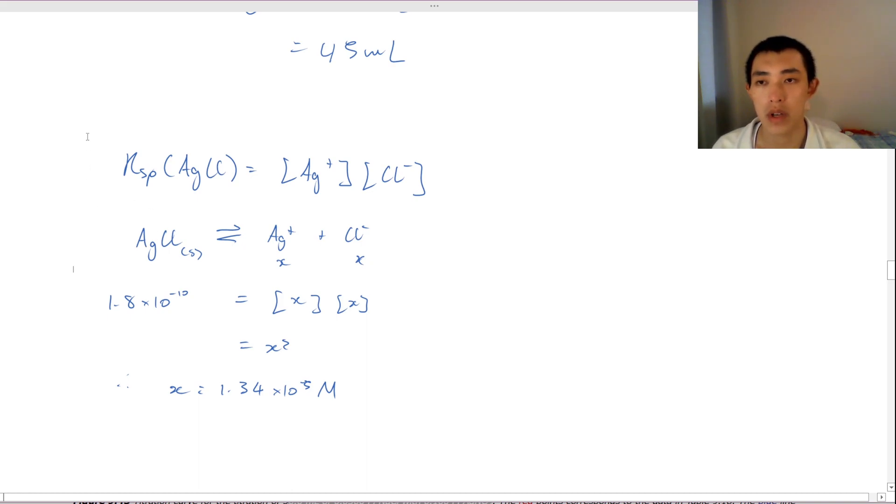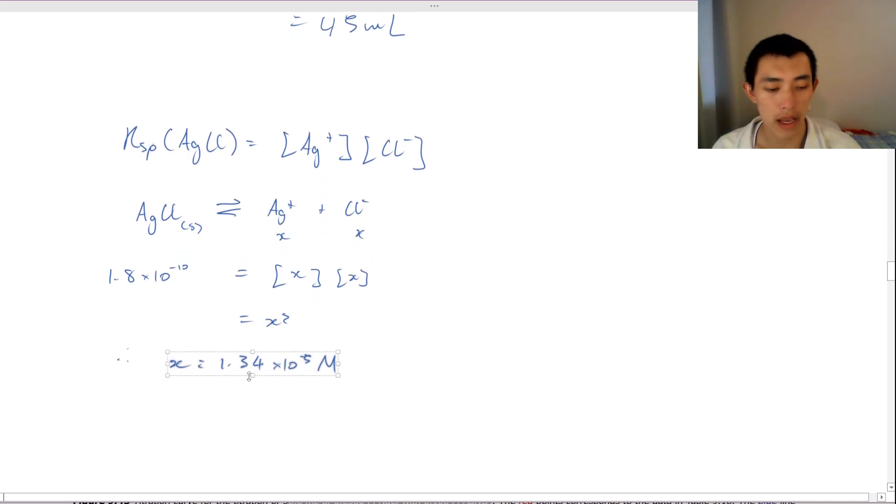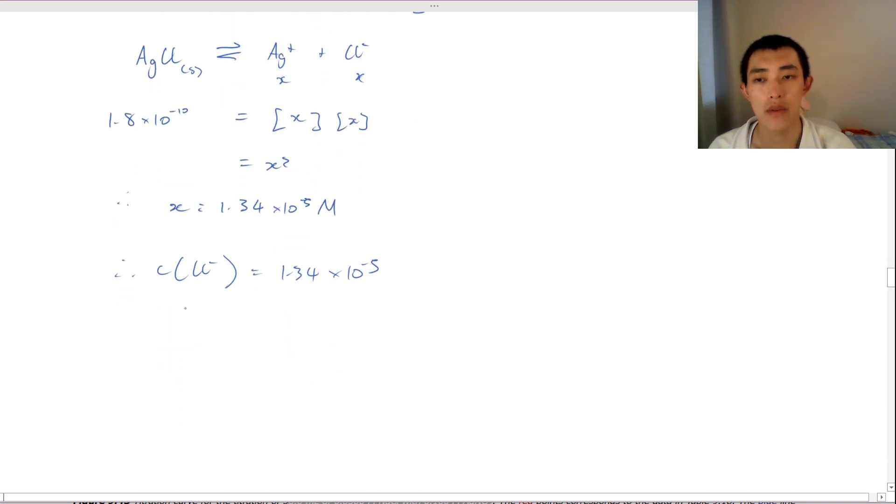So I've just got it again, and you can see how we've got our answer of this. So we can see that therefore our concentration of chlorine is equal to 1.34 times 10 to the negative 5. And therefore our pCl is going to be negative log base 10 of 1.34 times 10 to the negative 5. Which is going to be 4.87.